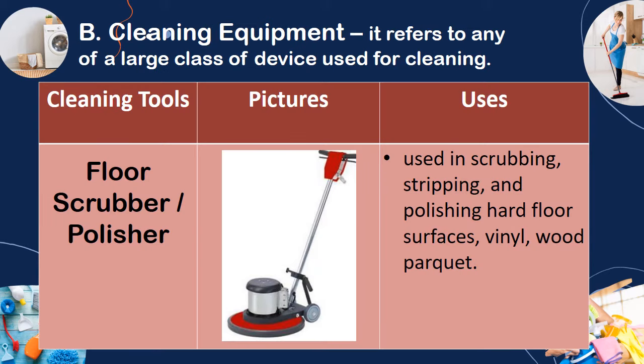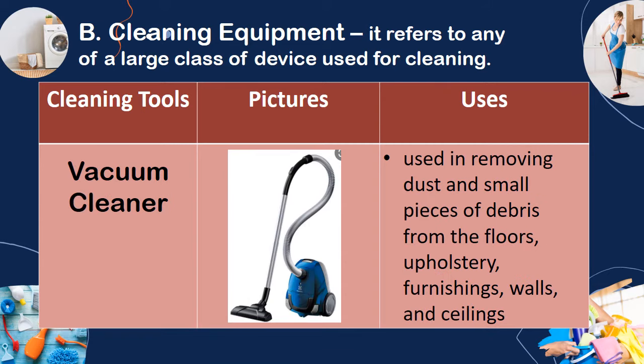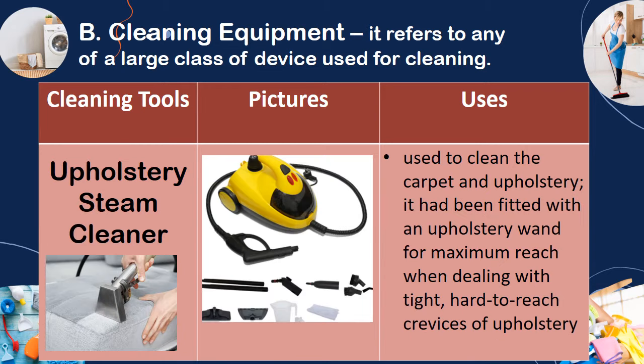Cleaning equipment refers to any of a large class of devices used for cleaning. The floor scrubber or polisher is used in scrubbing, stripping, and polishing hard floor surfaces, vinyl, and wood parquet. The vacuum cleaner is used in removing dust and small pieces of debris from the floor, upholstery, furnishings, walls, and ceilings. The upholstery steam cleaner is used to clean the carpet and upholstery; it is fitted with an upholstery wand for maximum reach when dealing with tight, hard-to-reach crevices of upholstery.